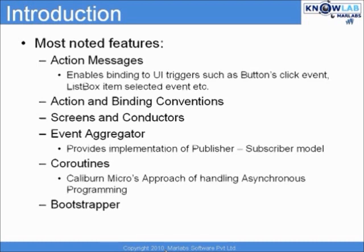The first feature is actions and messages. Caliburn Micro provides a messaging mechanism that enables binding to UI triggers such as a button's click event, a list box item selected event, etc. For those used to building MVVM applications using other frameworks such as Prism or MVVM Light, you might be familiar with concepts such as a delegate command or a relay command. Such concepts work very well when interacting with UI elements that derive from the ICommandSource interface. But in cases where we want to use the same concept with a list box item selected event or a menu open or closed event, it becomes a lot more complicated and we have to write our own custom behaviors. Caliburn Micro eliminates this whole concept and brings in its own idea of actions and messages.